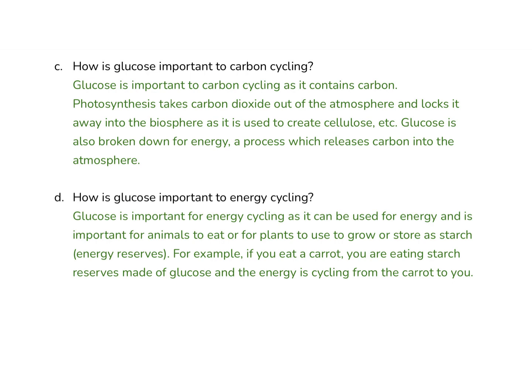How is glucose important to carbon cycling? It's important to carbon cycling as it contains carbon. Photosynthesis takes carbon dioxide out of the atmosphere and locks it away into the biosphere as it is used to create cellulose. Glucose is also broken down for energy, which is a process that releases the carbon back into the atmosphere. The CO2 goes out of the air during photosynthesis into this high-energy glucose molecule, which can then be used to help create ATP, or it can be used for storage as starch or for cell walls as cellulose.